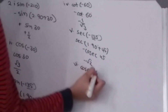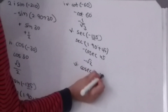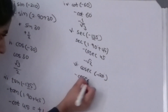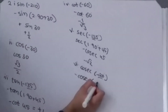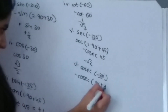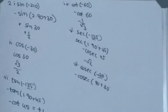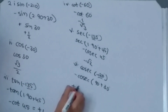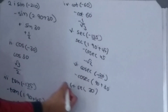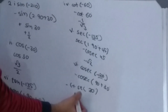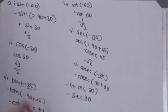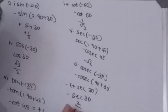Sixth: cosec(−120°). Then minus cosec, splitting as 90° + 30°. That gives plus sin, and with the minus sign it becomes minus sec(30°). Sec(30°) is 2/√3.